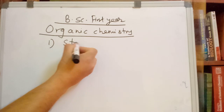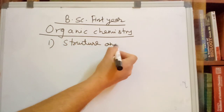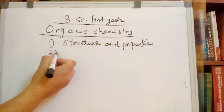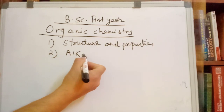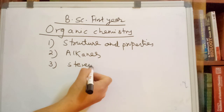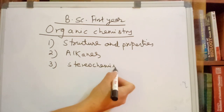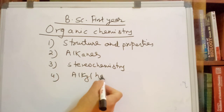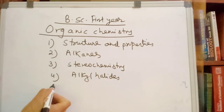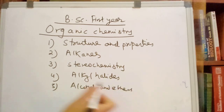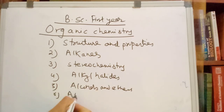The chapters and properties include: Number 1 is Alkanes, Number 2 is Alkenes, Number 3 is Stereochemistry, Number 4 is Alkyl Halides, Number 5 is Alcohols and Ethers, Number 6 is Alkenes, and Number 7 is Alkynes.